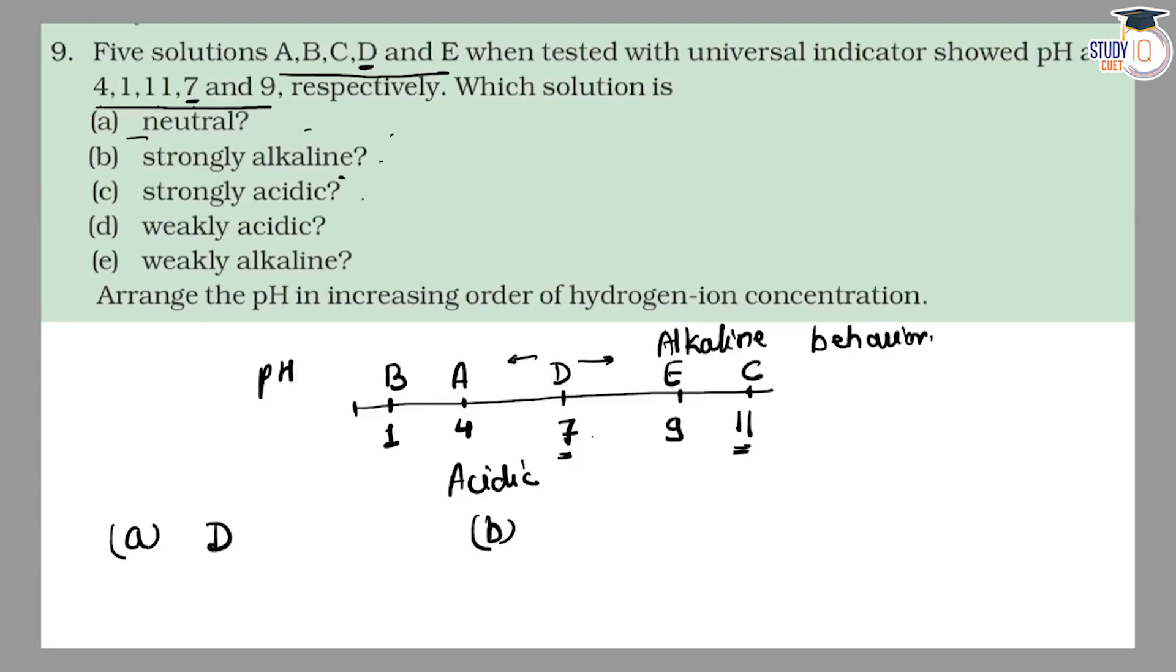So the higher the pH value, the more alkaline it will be. And strongly alkaline means 11, which will be C. So part B is answered, solution C.